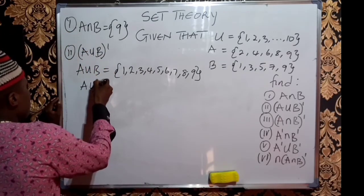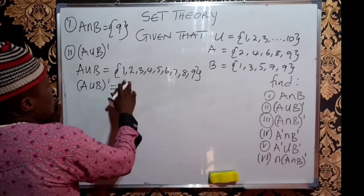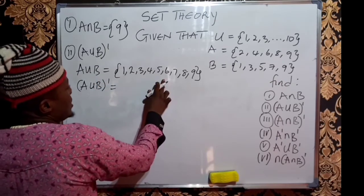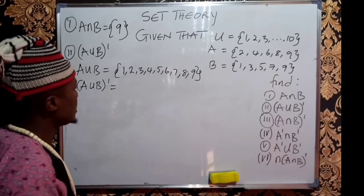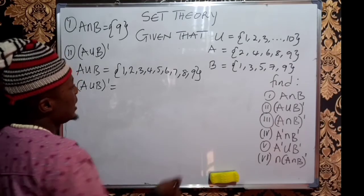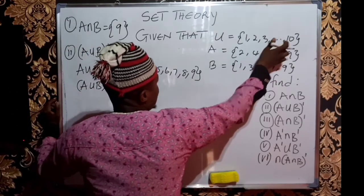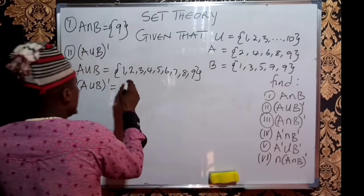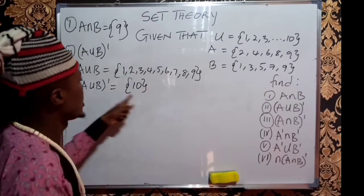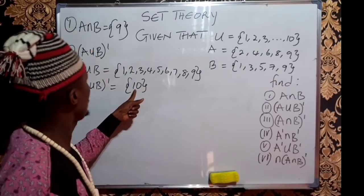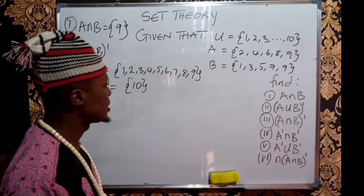Now for (A ∪ B)' — this set is not complete, something needs to complete it. The missing element is 10, because 10 is not in A ∪ B but 10 is in the universal set. So (A ∪ B)' gives us just 10, because once 10 comes into this set it becomes complete.